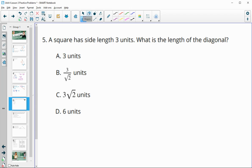Number 5, a square has a side length of 3 units. What is the length of the diagonal? So we're looking for this. And remember that the relationship between the diagonal and the side is that they're a square root of 2 factor different.